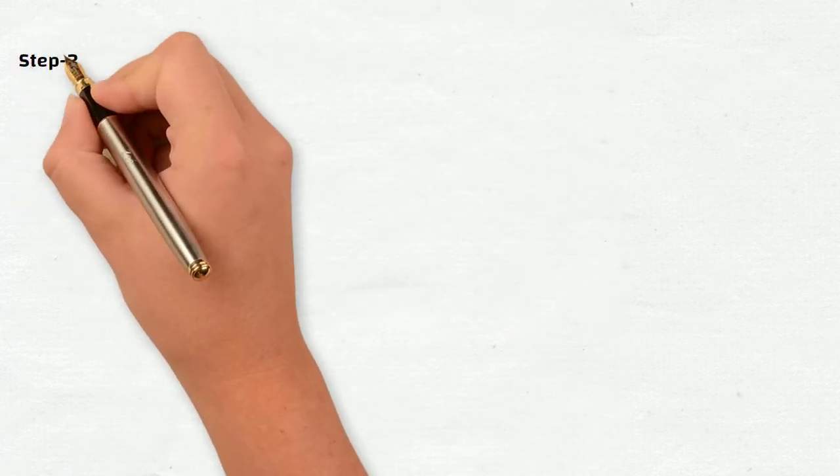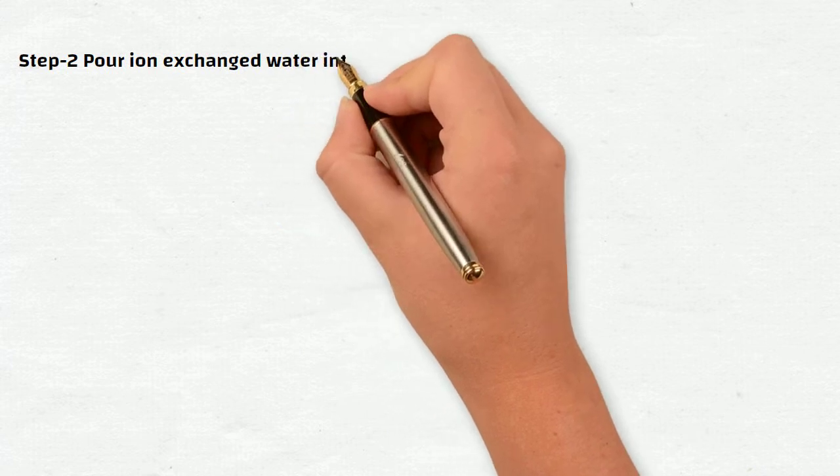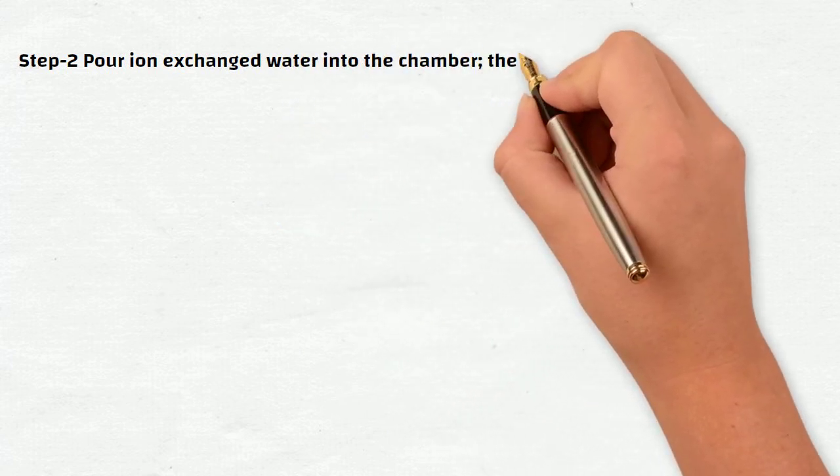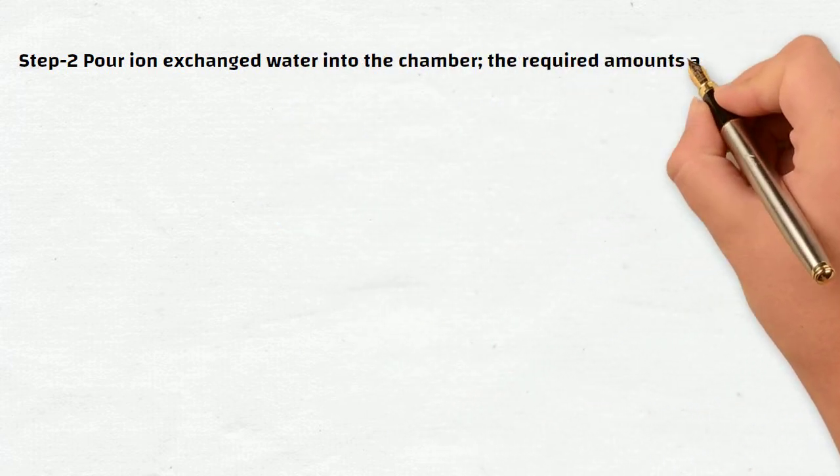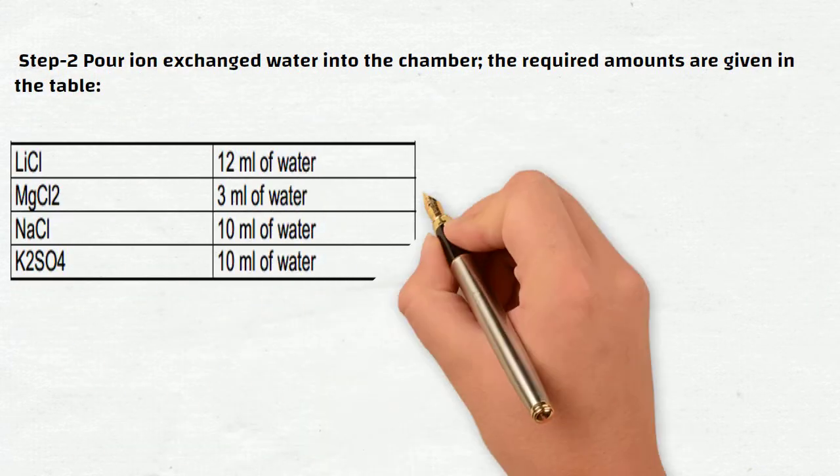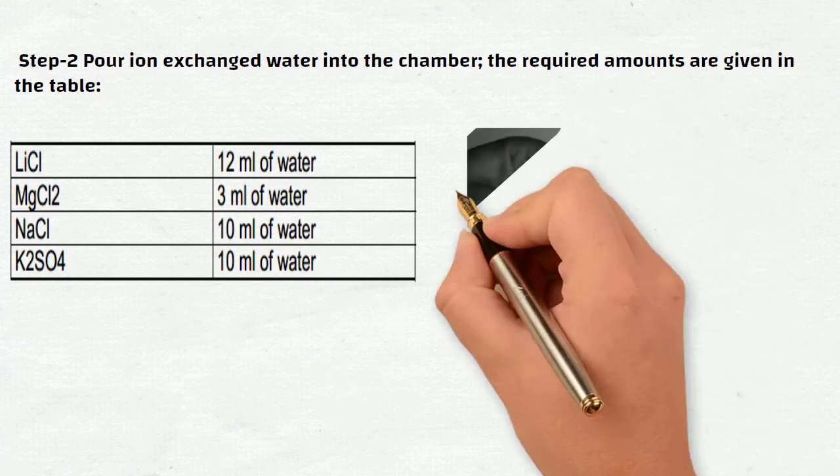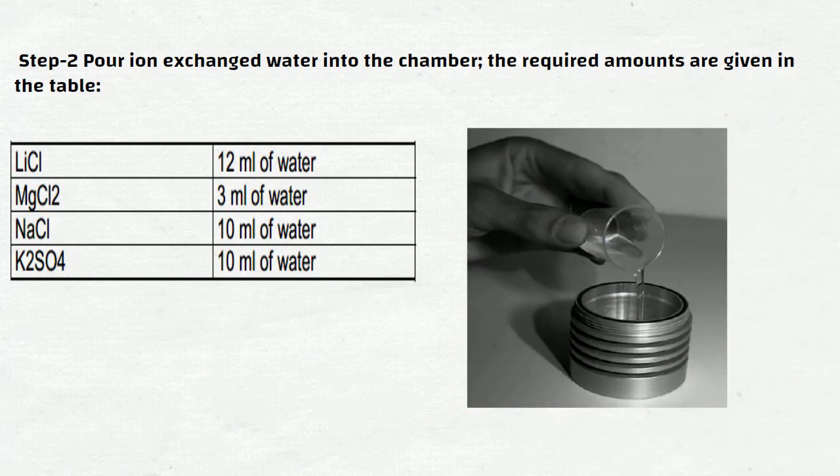Step 2: Pour ion-exchanged water into the chamber. The required amounts are given in the table. For lithium chloride, add 12 ml of water into the chamber. For magnesium chloride, add 3 ml of water into the chamber. For NaCl, add 10 ml of water. For potassium sulphate, add 10 ml of water.